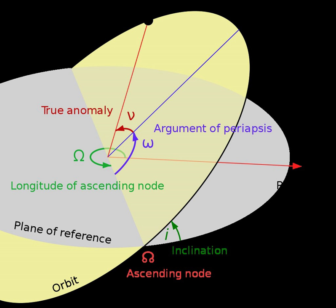An inclination of 0 degrees means the orbiting body has a prograde orbit in the planet's equatorial plane. An inclination greater than 0 degrees and less than 90 degrees also describe prograde orbits.